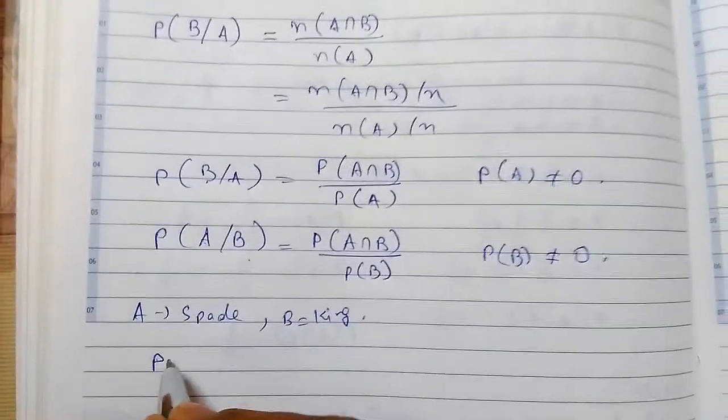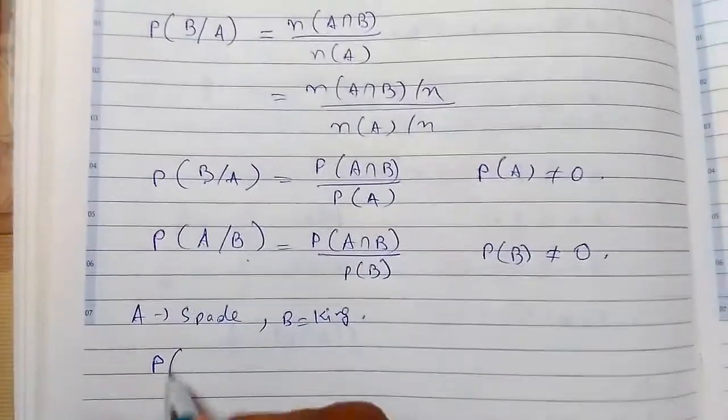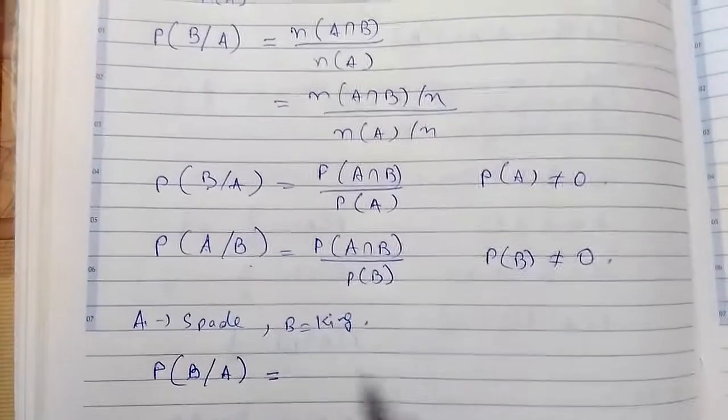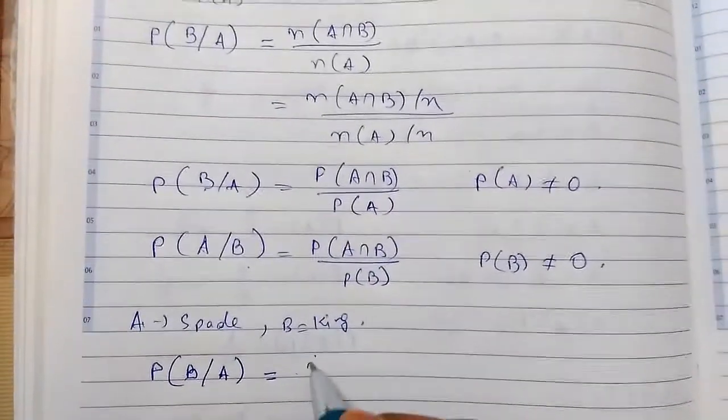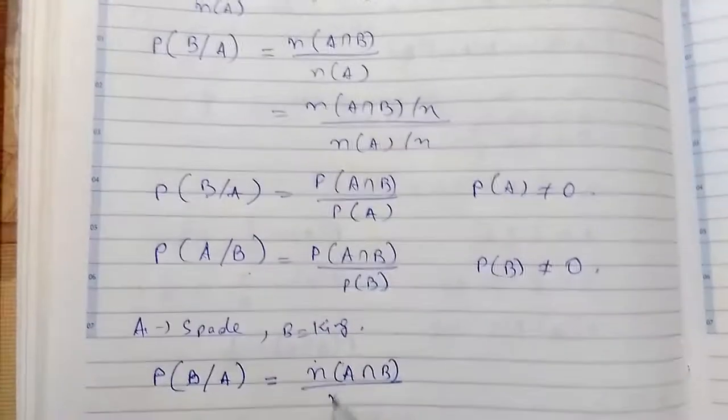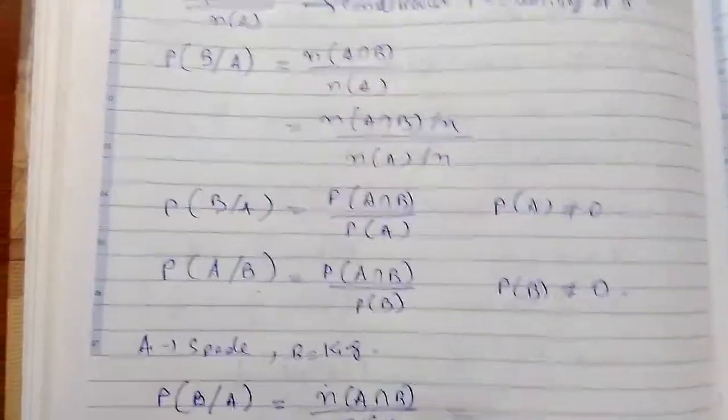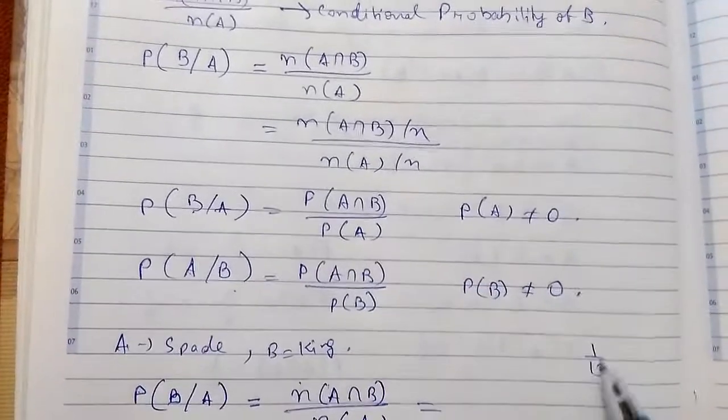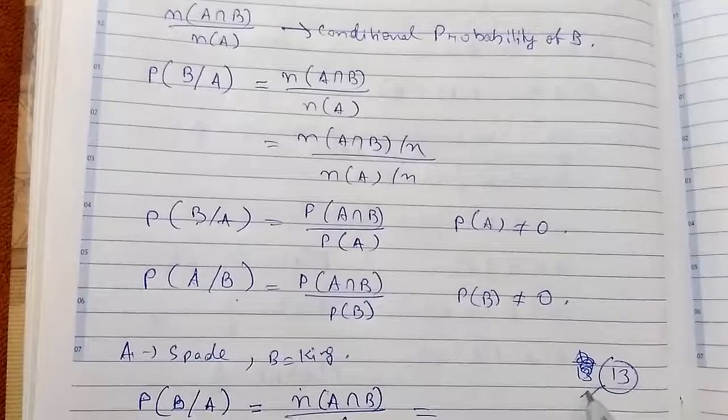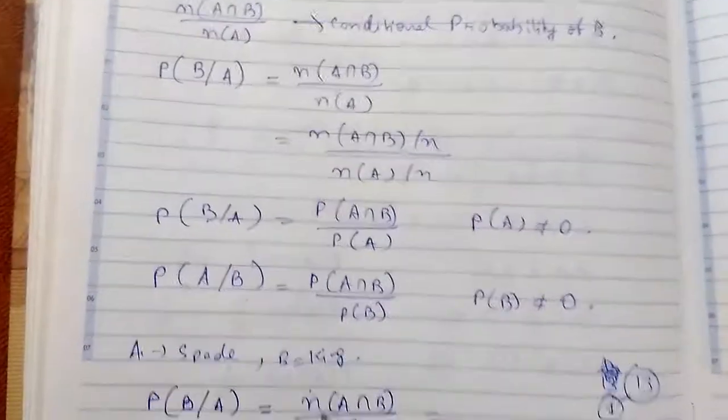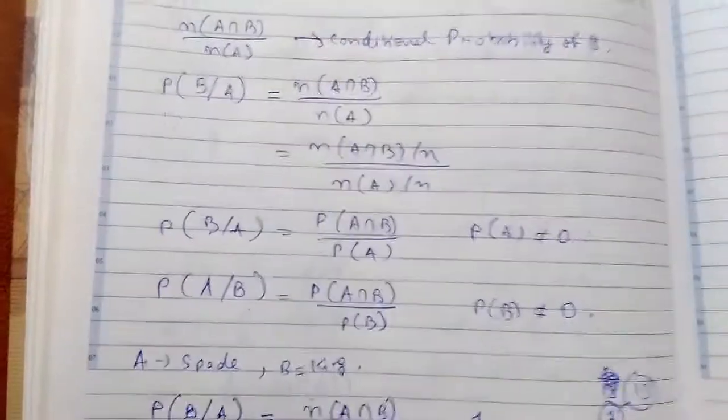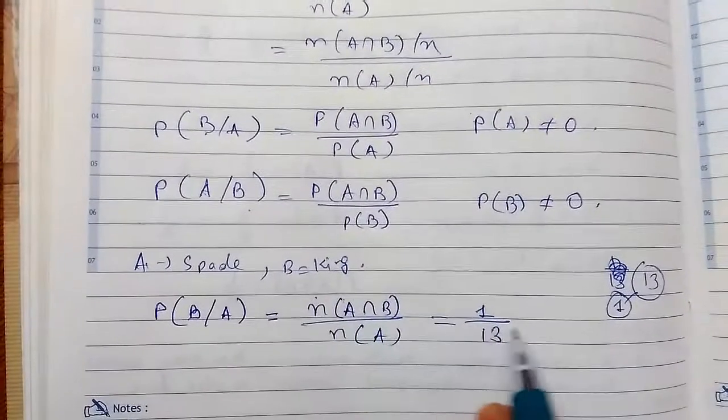We need to find the probability of king, supposing spade has occurred. So probability of king given spade will be N of A intersection B upon N of A. There are 13 spades and among these 13, there is only one king spade. So the intersection will be 1 and the total is 13. So the conditional probability of king, supposing spade has occurred, is 1 by 13.